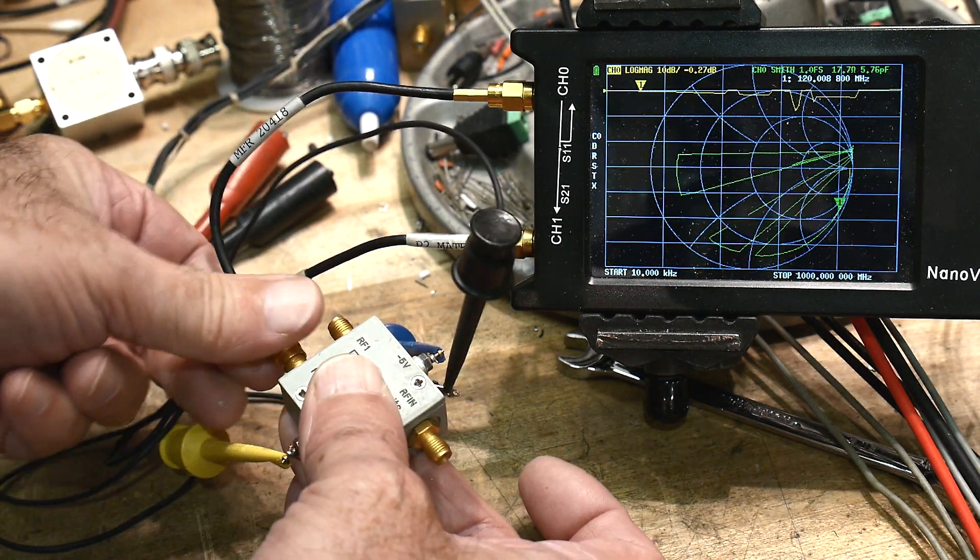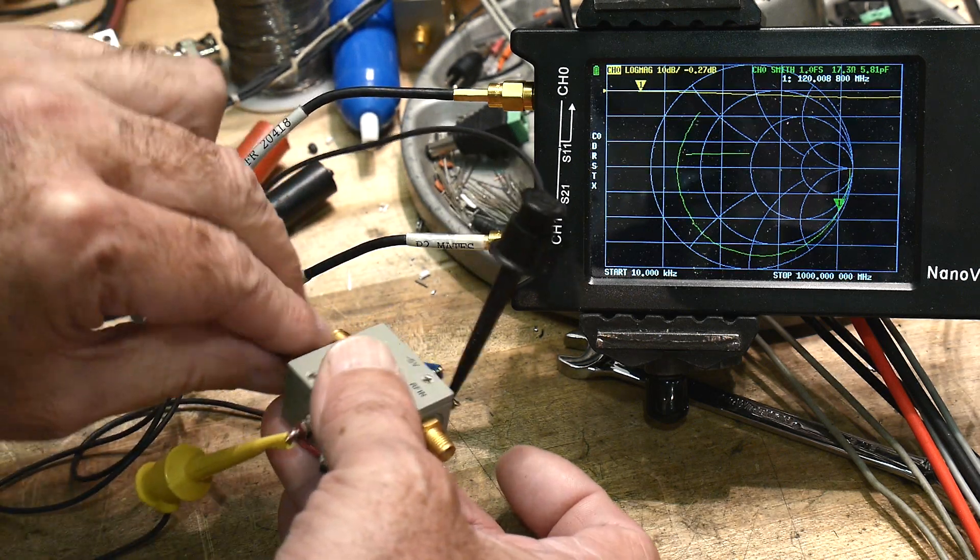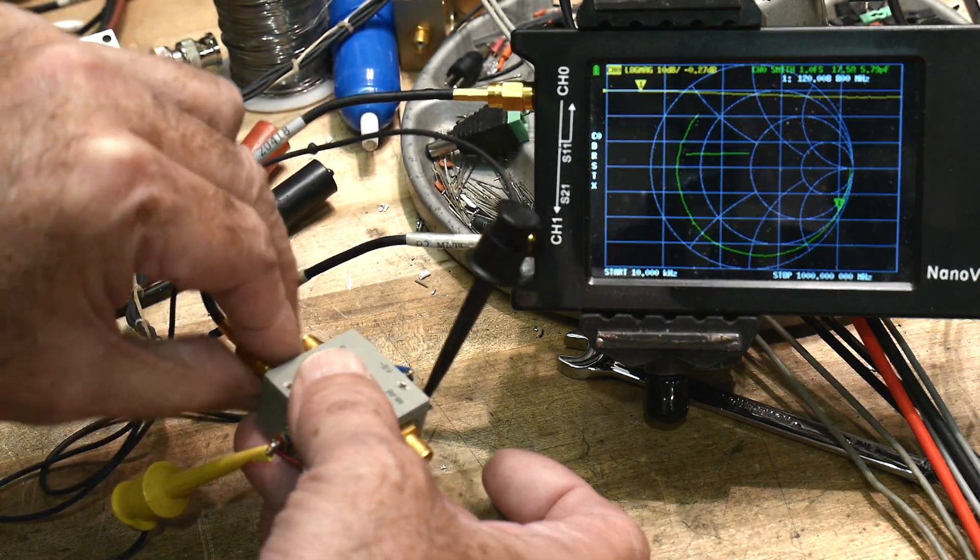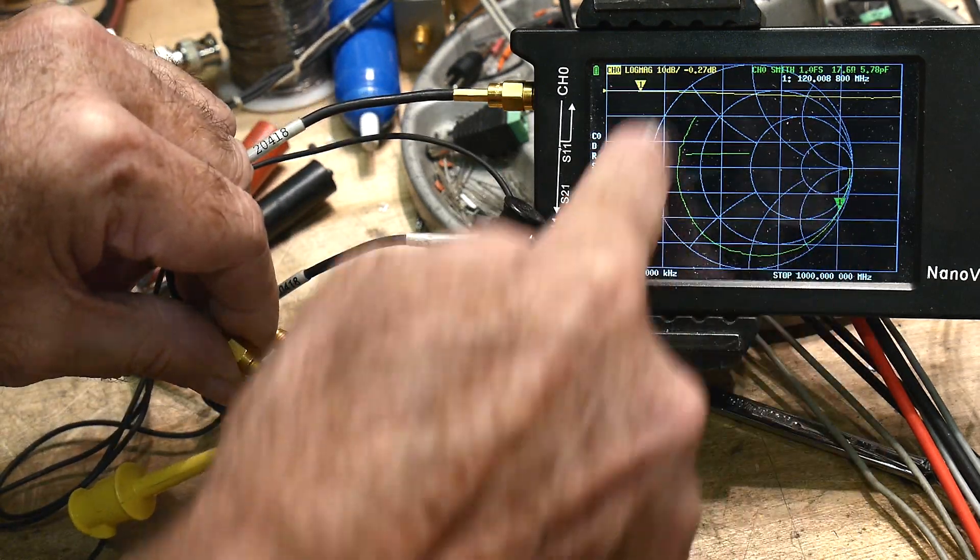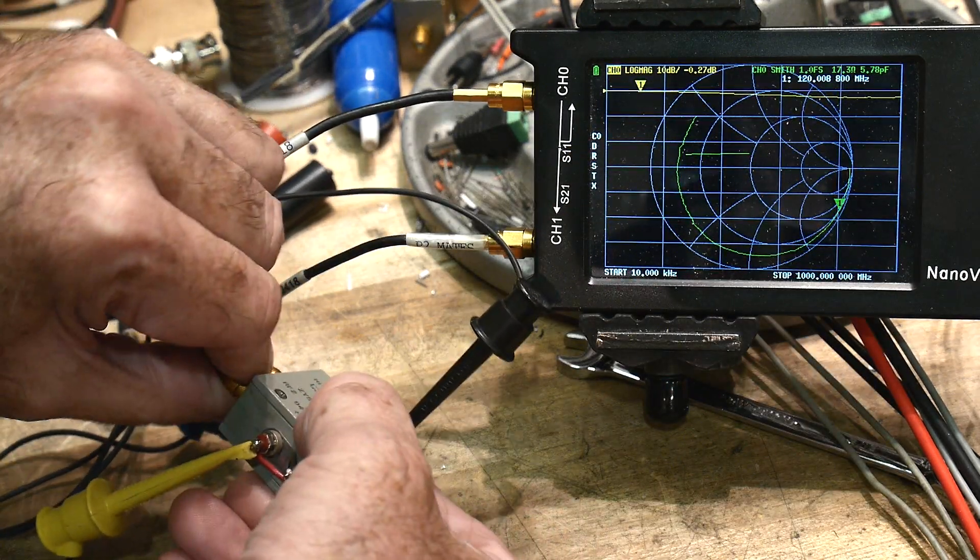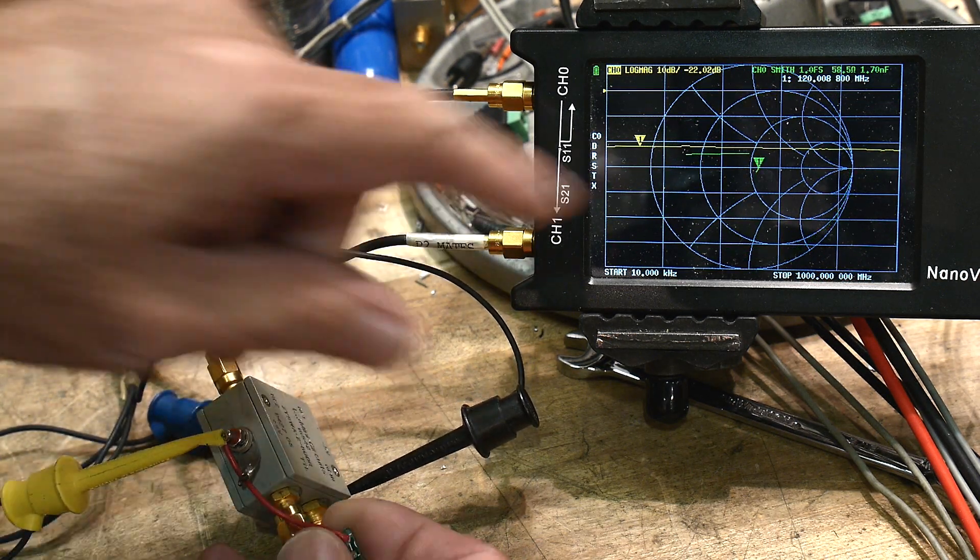Now RF2 will be no load until we energize it. So there we go. Definitely no load. We're having a big arc here showing that it's just open. So let's close it. And yeah, there we go.